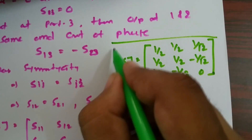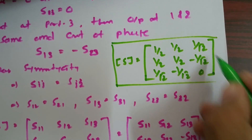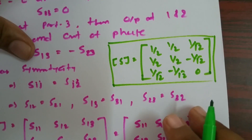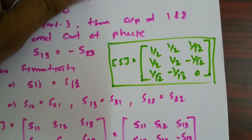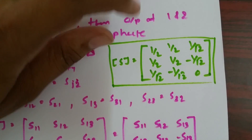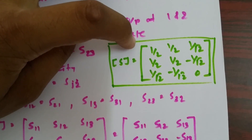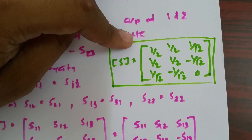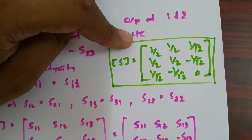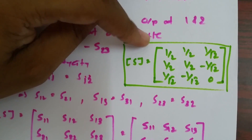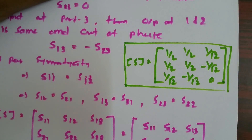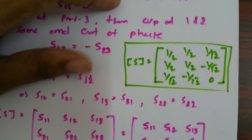This is the scattering matrix of E-plane T, and that is how E-plane T functions. Thank you so much for watching this video. If you like this video, please subscribe to my channel. If any query is there, please comment below so that I can solve those problems. Thank you so much for watching.